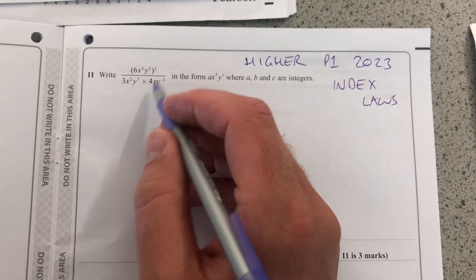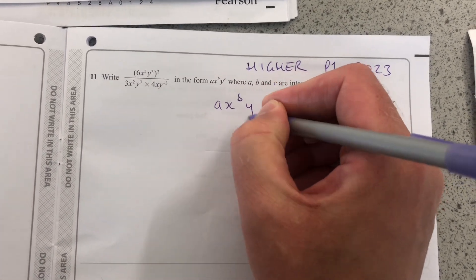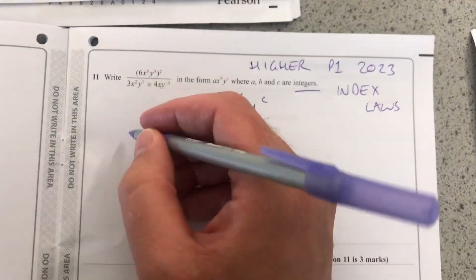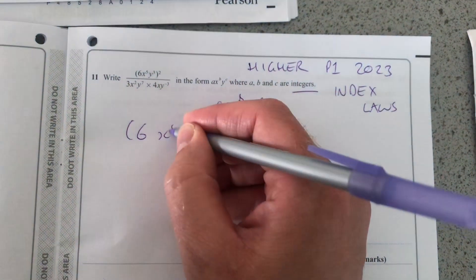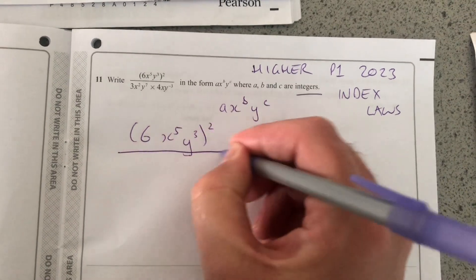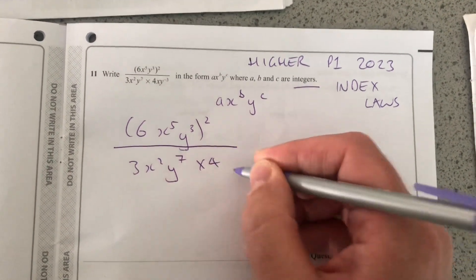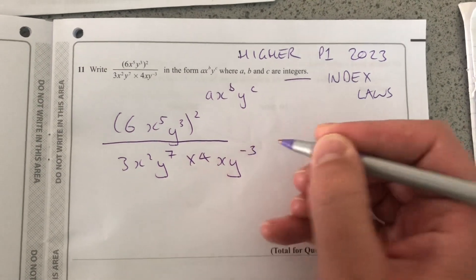We have to write this in the form AX to the B, Y to the C, where they're all integers. So the initial expression is 6X to the 5Y to the 3, 4 squared over 3X squared Y to the 7 times 4X to the Y to the minus 3.